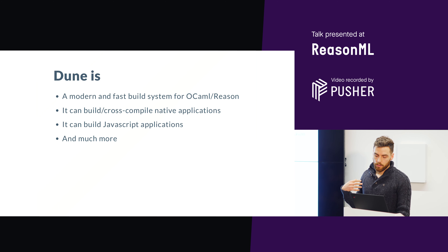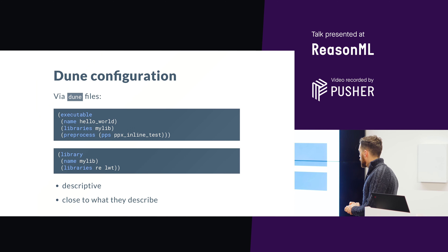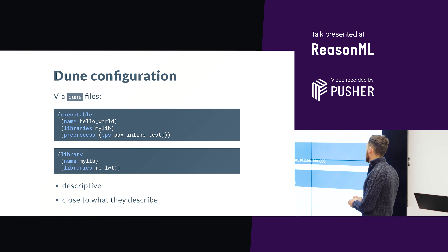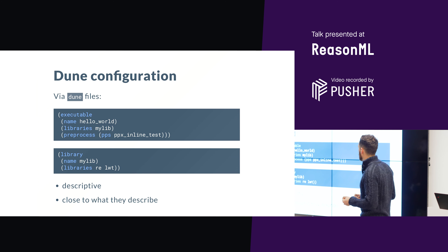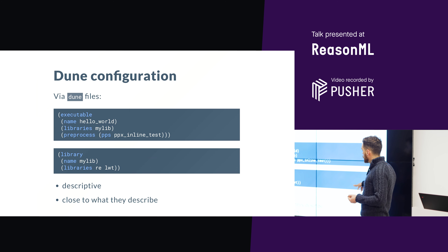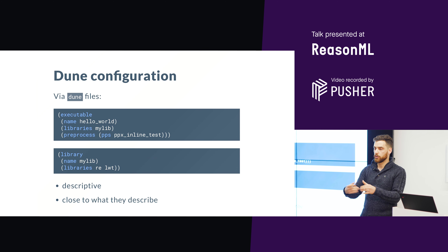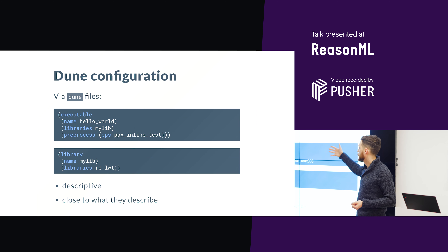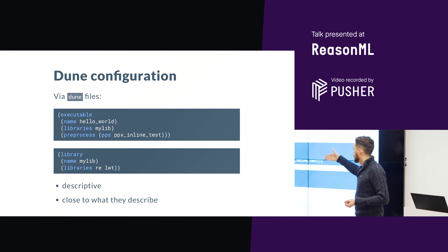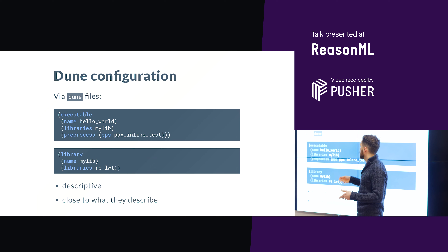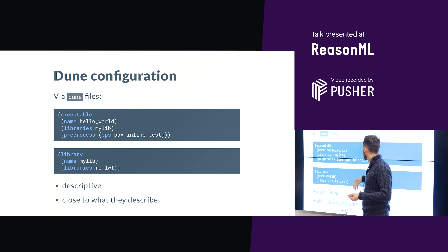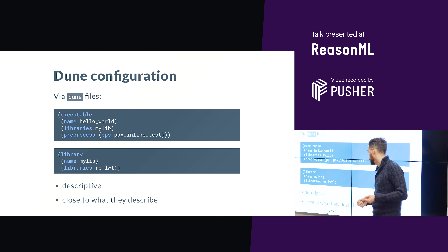How do you configure it? The interface you have with the tool is mainly via dune files — the tool takes its name from them. Two important points about these configuration files: first, they are very descriptive. You just describe what your project is about. Typically you might say: I have an executable called 'hello world', and inside this code I'm using a library called mylib and preprocessing it with some PPX rewriter.